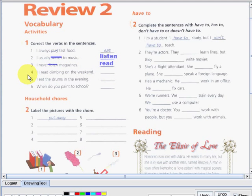Okay. So, what about number four? I blank climbing on the weekend? Okay. So, what's the answer with this one? Very good. So, I go climbing on the weekend. What about number five? I eat the drums in the evening. So, what is the answer? Very good. So, I play the drums in the evening. What about number six? When do you paint to school? So, what's the answer? So, when do you study to school? Very good.